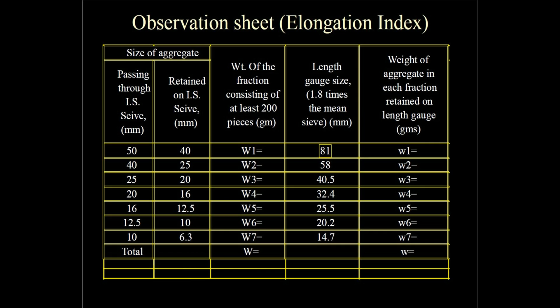In the observation table for the elongation index, the first two columns are the same: the aggregate size passing and retained on the respective sieves. The third column is the weight of the fraction consisting of at least 200 pieces — the total weight of the 200 pieces. The last column is the weight of aggregate retained on the respective length gauge slot.